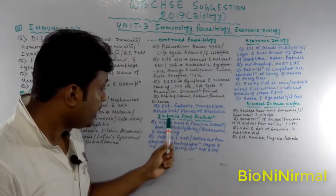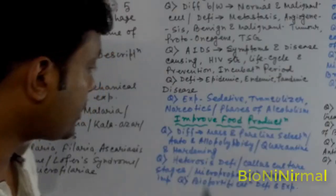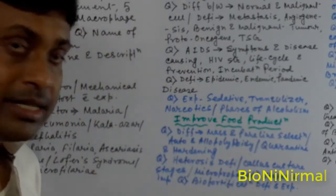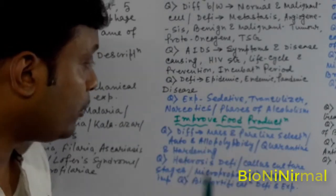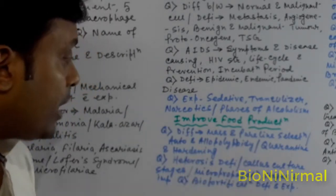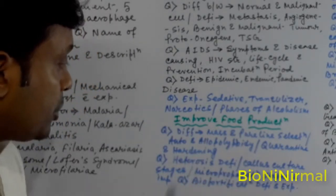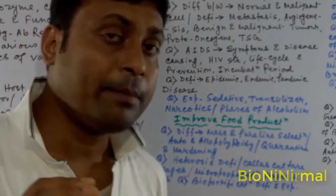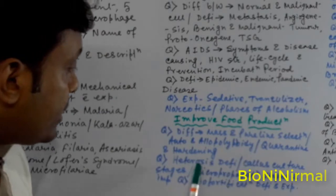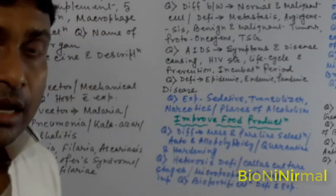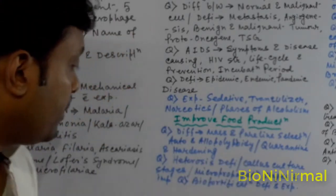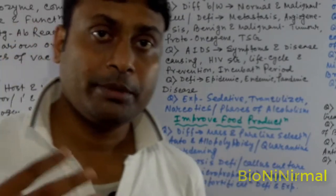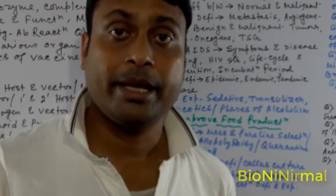Improved Food Production: definition of mass and pure line selection, auto and allo polyploidy, quarantine and hardening definition. Also polyploidy source. Next, heterosis definition, hybrid figures, and callus culture stages.